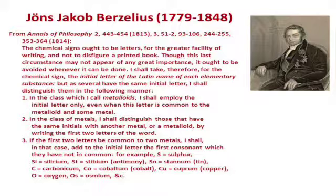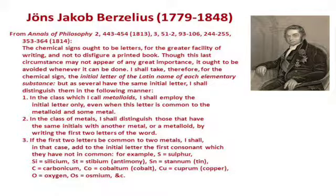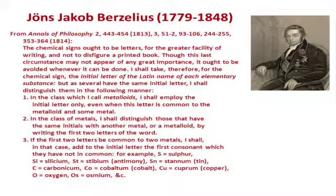The five properties are lustre, malleability, ductility, sonorosity, and conductivity. Elements that possess these properties are classified as metals, and those that do not are non-metals. However, there are certain elements which may possess either of these five properties, and they are commonly known as pseudo metals, or metalloids.